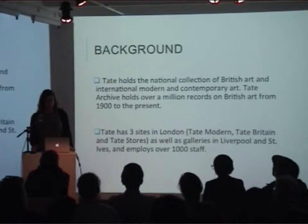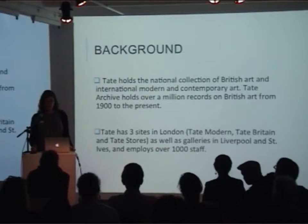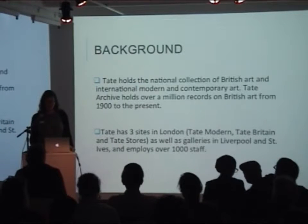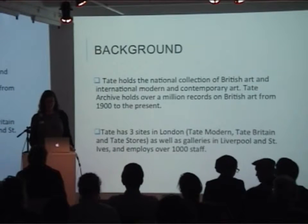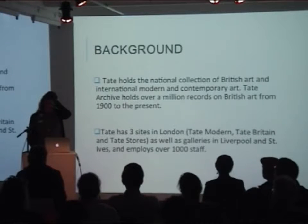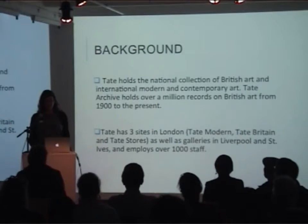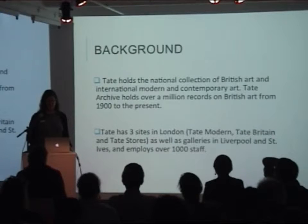Tate holds the National Collection of British Art and International Modern and Contemporary Art, and the Tate Archive holds over a million records on British art from 1900 to the present. We have three sites in London at Tate Modern, Tate Britain, and Tate Stores, as well as galleries in Liverpool and St Ives, and over a thousand staff in all.